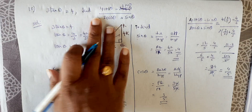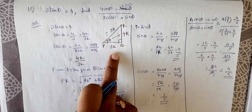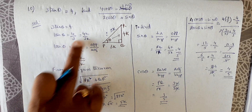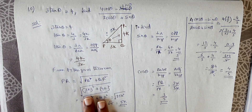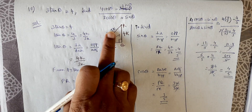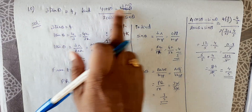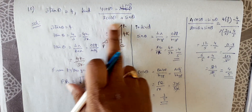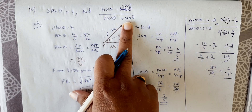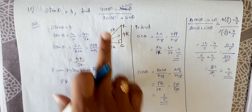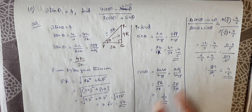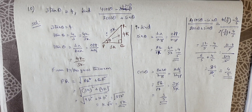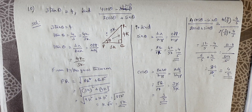Always read the problem carefully. Identify what is given and use it to find the corresponding sides. If the ratio involves k, multiply numerator and denominator by k, then use Pythagoras to find the third side, and finally find the trigonometric ratios involved in the expression.